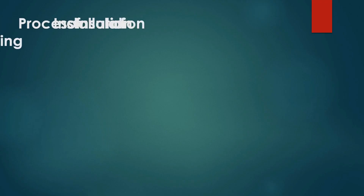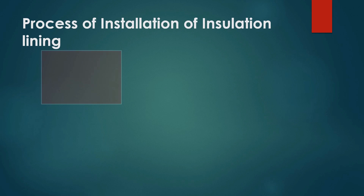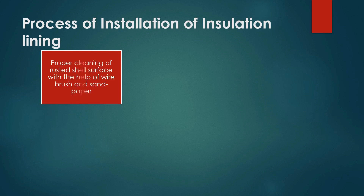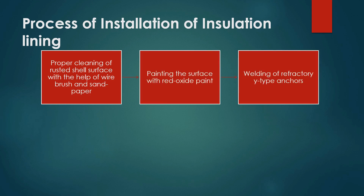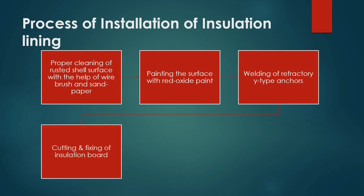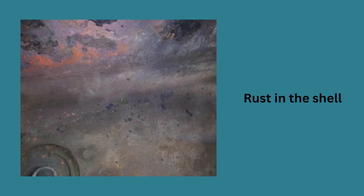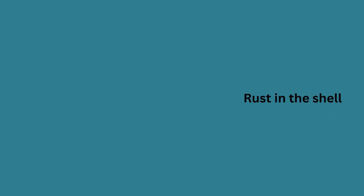Let's see the process of installation of insulation lining step by step. Step one: proper cleaning of rusted shell surface with the help of wire brush and sandpaper. Step two: painting of shell surface with red oxide paint. Step three: welding of anchors. Step four: cutting and fixing of insulation board. Step five: flattening of the anchors.